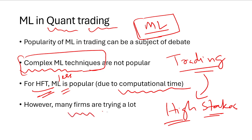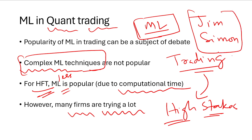Many firms are trying hard to gain competitive advantages through machine learning. Big firms like Renaissance Technology are making efforts, and Jim Simons — perhaps the most popular quant ever — has said that although his team uses machine learning, the greater emphasis is on collecting good quality data. Modeling techniques are secondary; if you don't have good data, no fancy technique will do a great job.